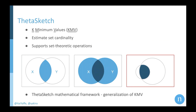This is how you get the constant storage requirements. K is a predefined constant, and 'minimum values' refers to the process of selecting elements for this sample. The way it works: for each element, you run some hash function, and then you take only those elements with the minimal hash function values.